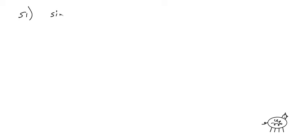We're going to start with problem 51: sine of gamma plus cosine of gamma, quantity squared, equals sine of 2 gamma plus 1. So probably the side that's more difficult would be the left side, because it's really tough to turn into something with a quantity squared.